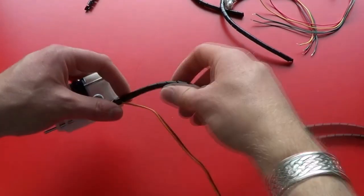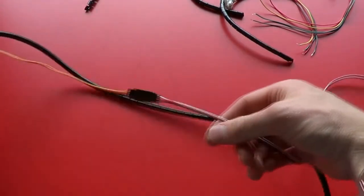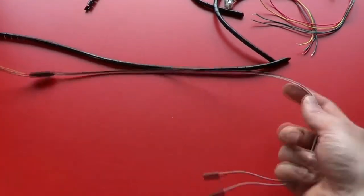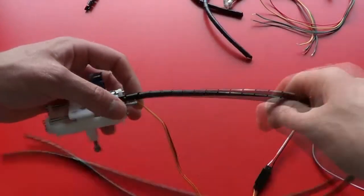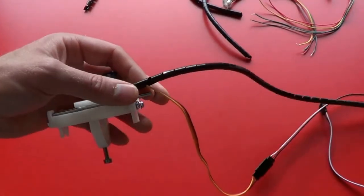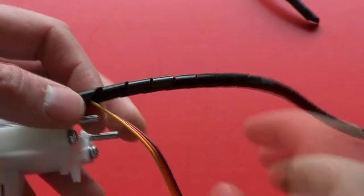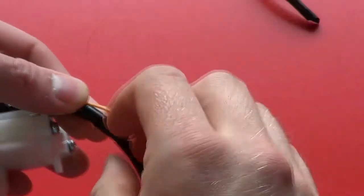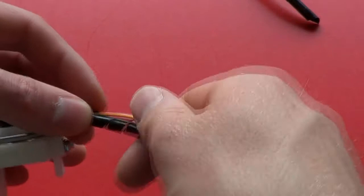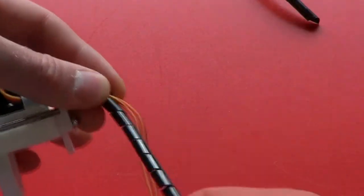Now we need to wrap the spiral wrap around this entire length of cable all the way back to the connector. The spiral wrap works just by twisting the black wrap around the cable. It is a little time consuming to do.